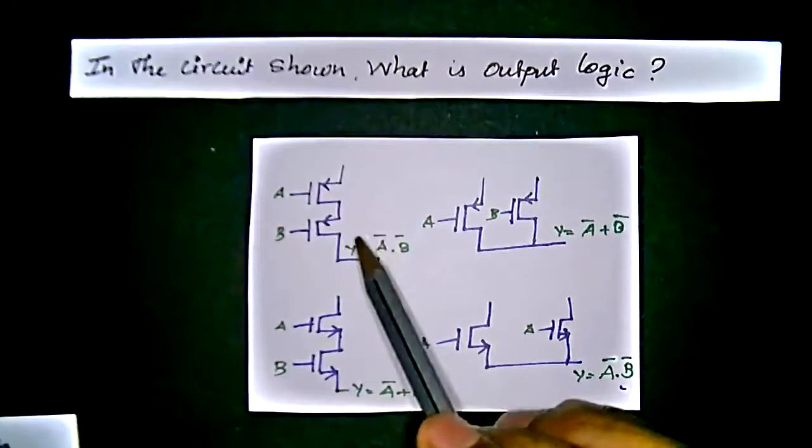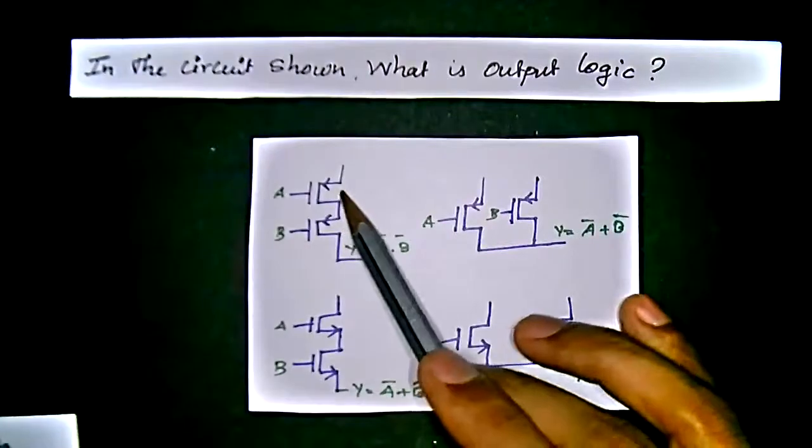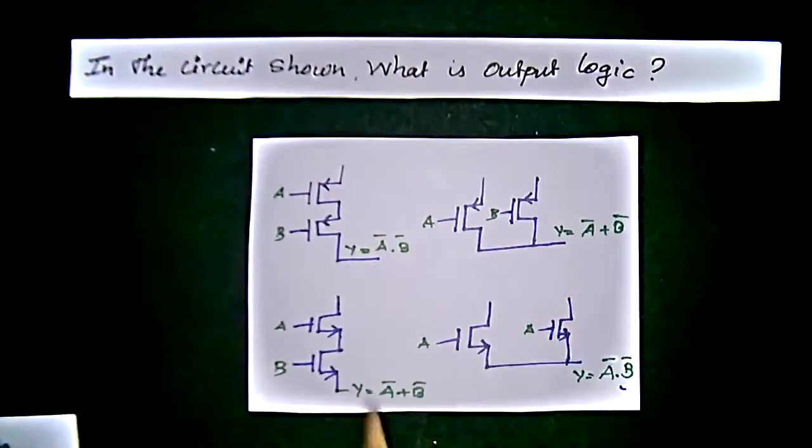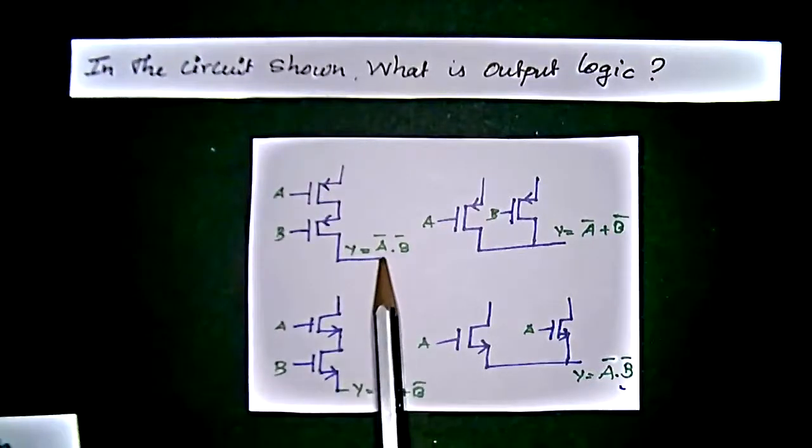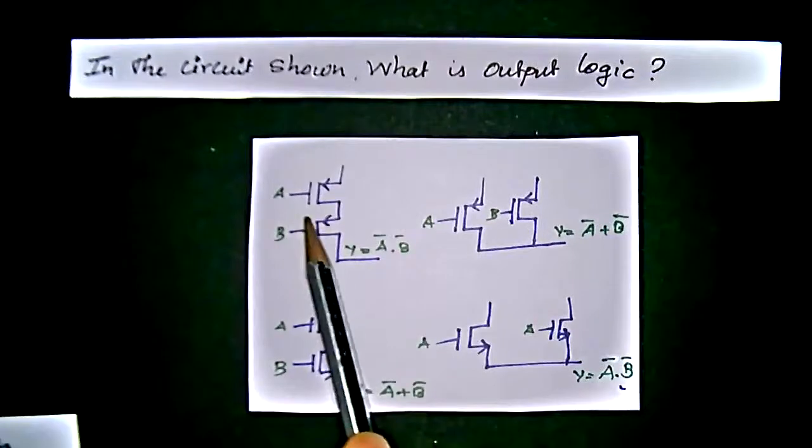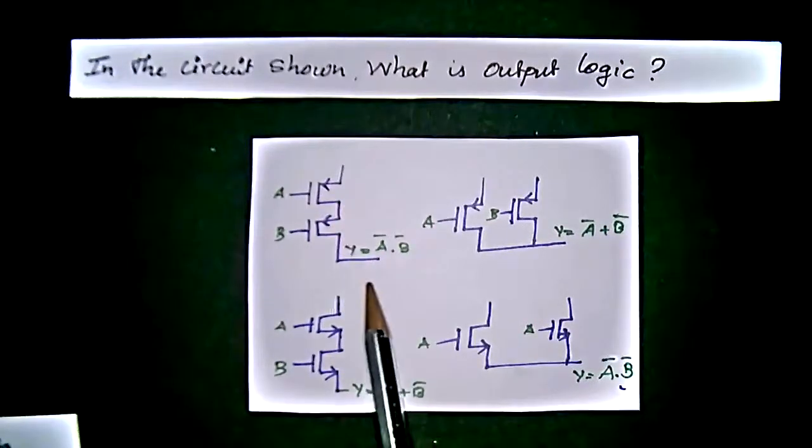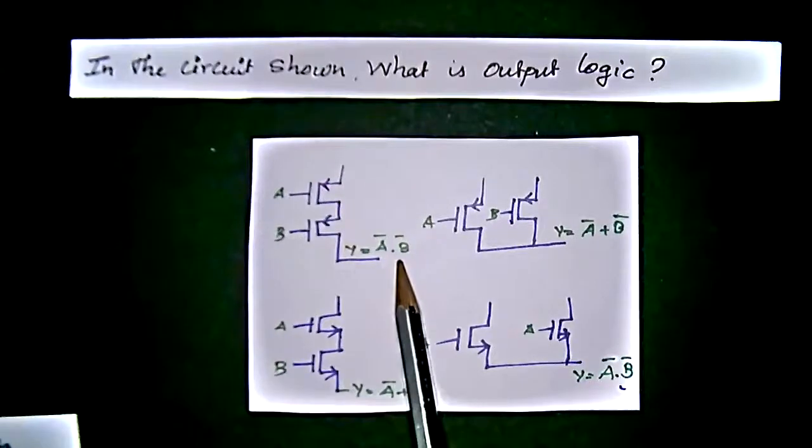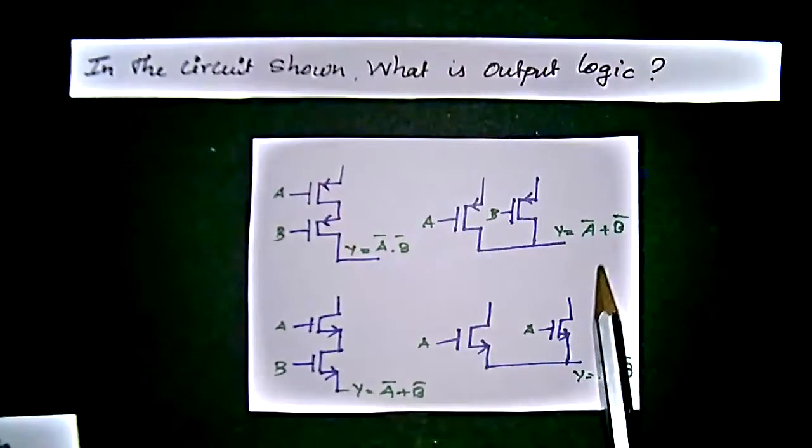We have the studies that when we have the NMOS in the series, it will get the both value in multiple term, that is A into B bar. Because when it's both getting the 0 value, it will get automatically 1, A equal to 1.